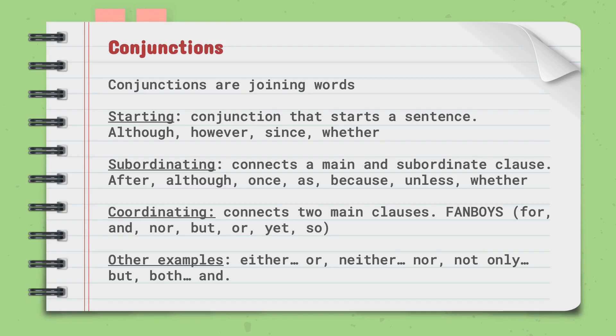Subordinating conjunctions connects a main and subordinate clause. Examples are after, although, once, as, because, unless, or whether.